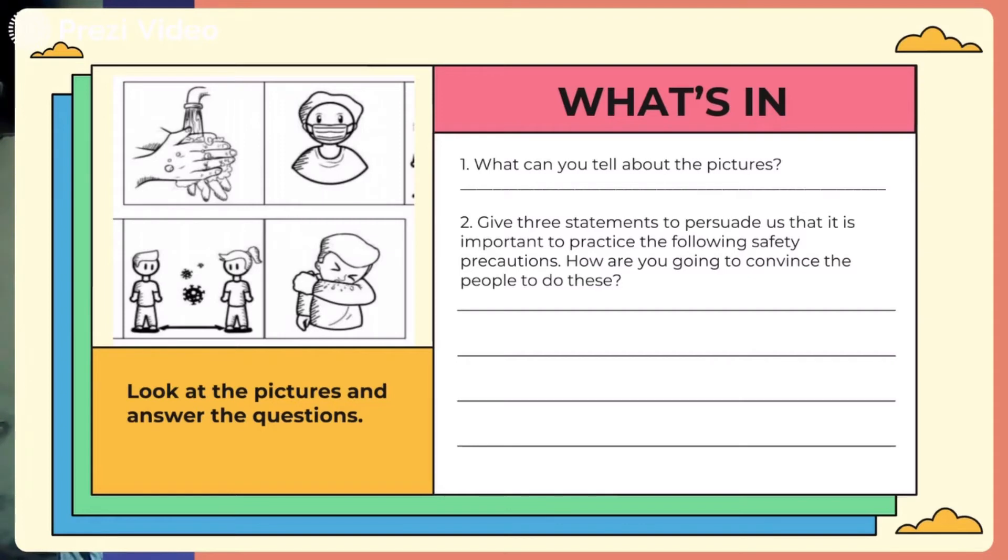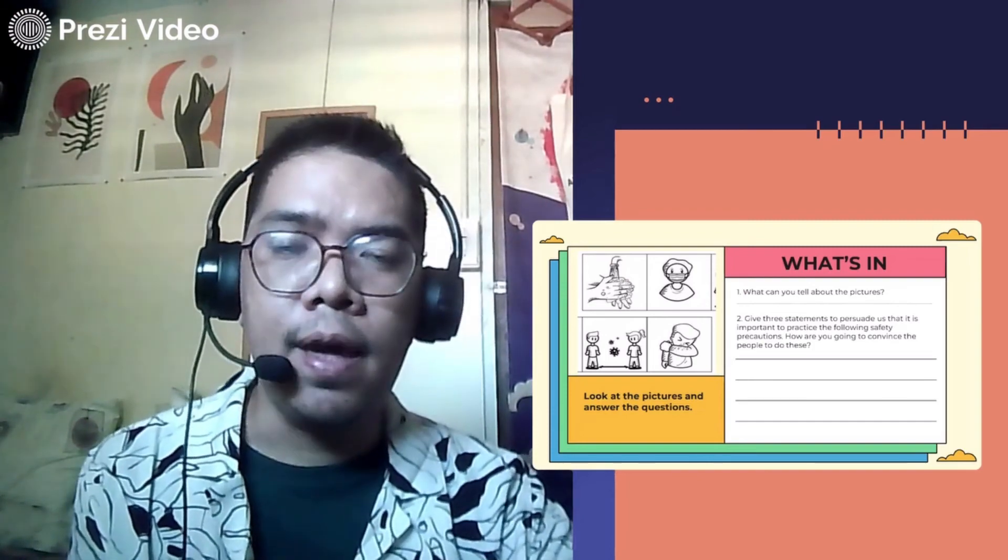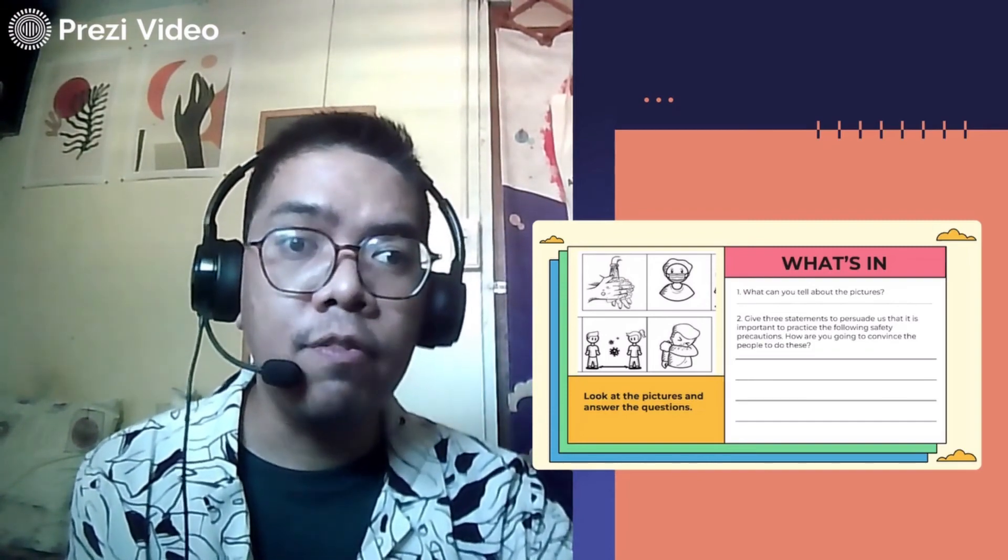And on the last picture, you see a person coughing, or sneezing, using his elbow. Again, it is very important that we follow these protocols when we go outside, to prevent us from the COVID-19 virus.